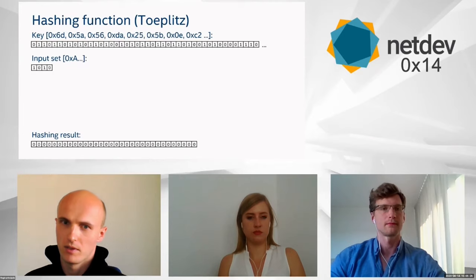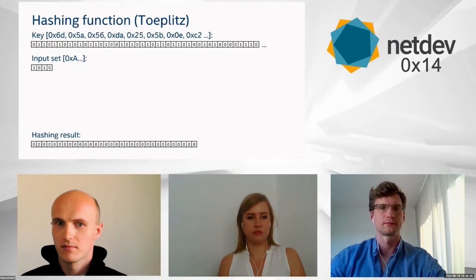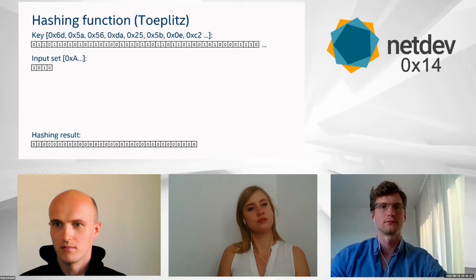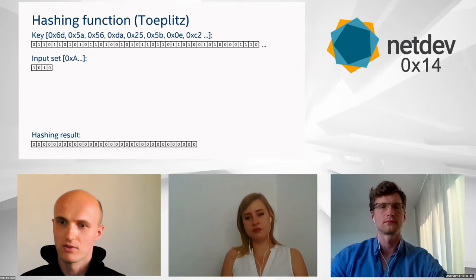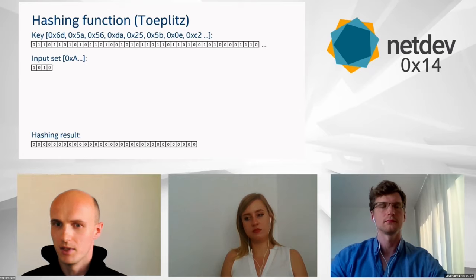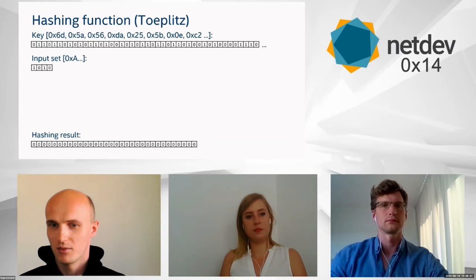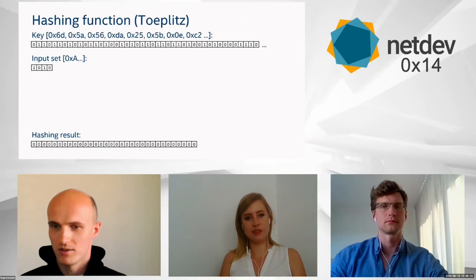Now that we've extracted the input set, we need to run it through a hashing function. The most popular one is Toeplitz hash. The principle is that for every one-bit in the input set, the hash value is XORed with the masked part of the key corresponding to that bit. For this presentation, let's assume we've extracted only four bits for the input set and use the standard key.